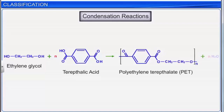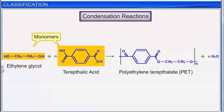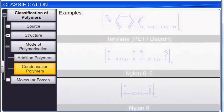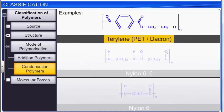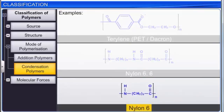The condensation reaction between ethylene glycol and terephthalic acid forms polyethylene terephthalate (PET). When two different monomers link together, a water molecule is eliminated. Important examples of condensation polymers are Terylene, also known as PET or Dacron, Nylon-6,6, and Nylon-6.